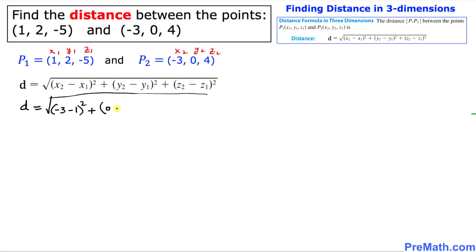minus y1 is 2, squared, plus z2 in our case is 4 minus z1 is negative 5, and then squared.